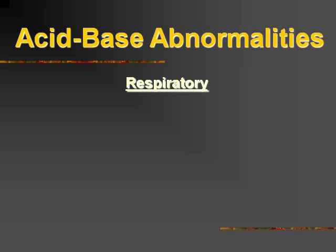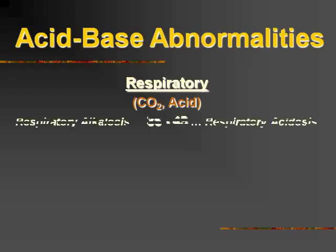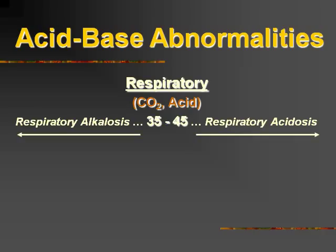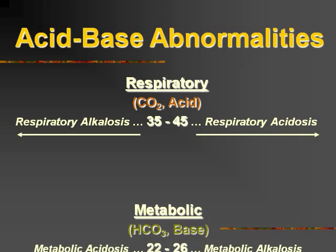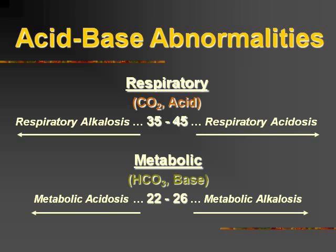Summing that up: when you think respiratory, think CO2 on your ABG, think acid — the normal range being 35 to 45 for the PCO2. If we don't have enough circulating CO2, we're going to have a respiratory alkalosis. Whereas if we have too much acid circulating, greater than 45, we're going to have a respiratory acidosis. When we say metabolic, think base, think bicarb. The normal HCO3 on the blood gas is 22 to 26. If we don't have enough base circulating, we're going to have a metabolic acidosis. If we have too much base, we're going to have a metabolic alkalosis that bumps up our pH.